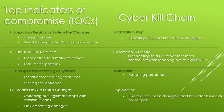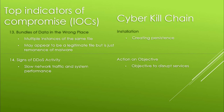Another IOC is unexpected patching of systems. When an attacker finds a vulnerability and makes their way into a system, they may patch it themselves to prevent others from getting in — possibly for obfuscation reasons, to make it appear to be a regular patch update. This is linked to the installation stage, better allowing for persistence. Mobile device changes are also an IOC: an attacker might switch out legitimate apps with malicious ones to carry out a man-in-the-middle attack, or change device settings or configuration profiles. This would be the exploitation stage, where the tool has already been delivered. Bundles of data in the wrong place — attackers place files into multiple folders on a system to maintain persistence — is an indication of the installation step.